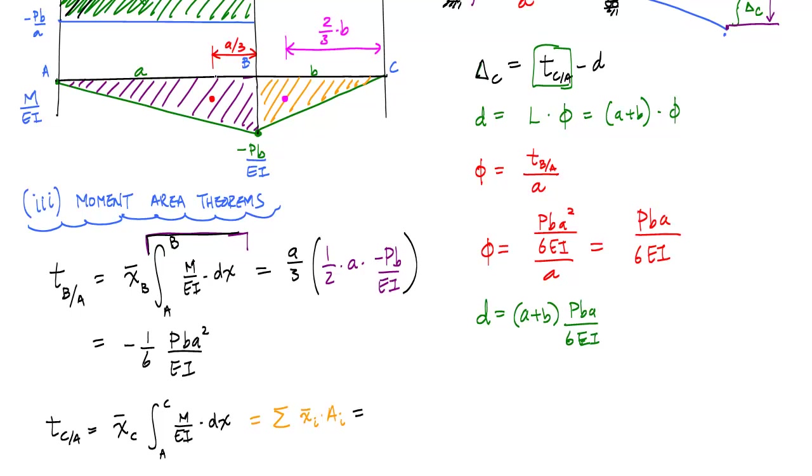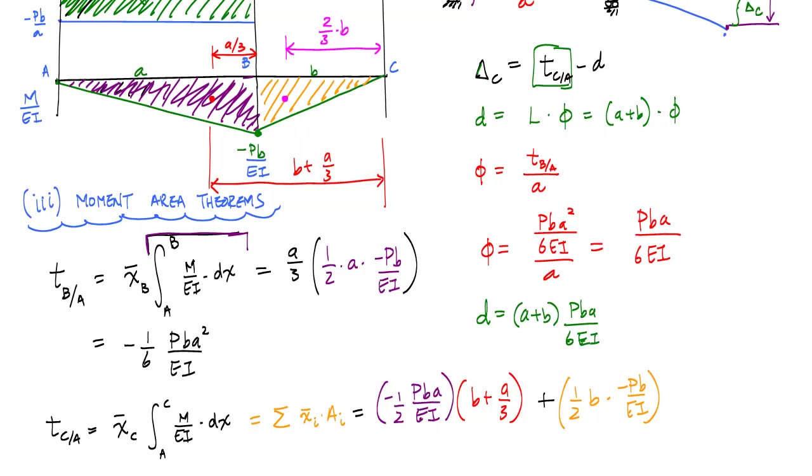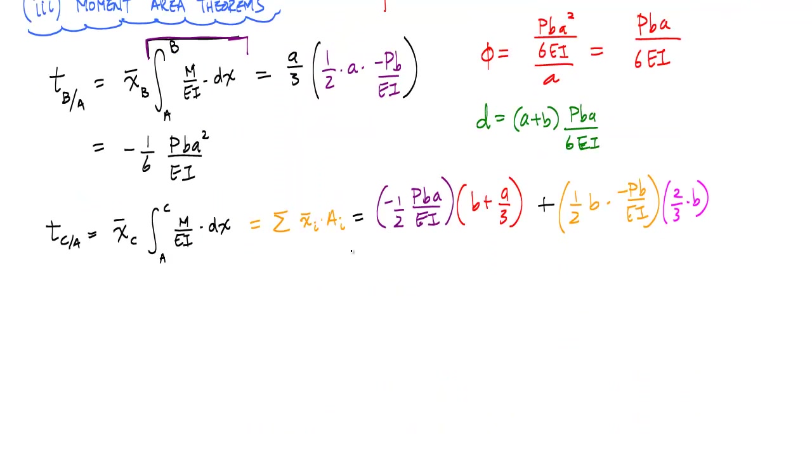And so I know for, let's call this purple area, the first area, the area of that is one-half negative PBA over EI. And the distance from point C to the centroid of that is actually this total distance right here. And that is B plus A over 3 plus the orange area, which is one-half the base, which was B, times the height, which is negative PB over EI, times the arm, which is two-thirds times B. And what we will get after we work out this algebra here is...